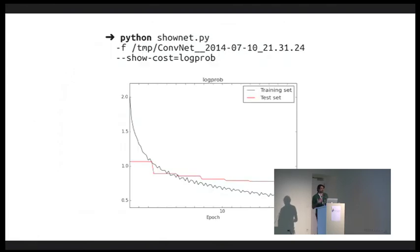To see the results or look inside your neural network at any time, you can use the show net script. It plots the training test error over time and displays the filters that the neural network has learned. As we go more forward, our training error will keep decreasing. At some point, the test error will start increasing because of overfitting.